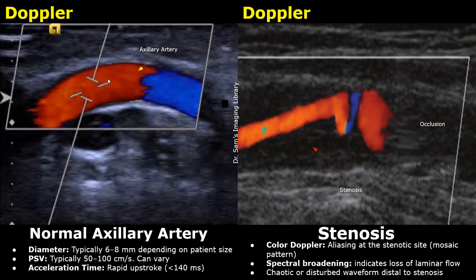Our first pathology to learn is stenosis of the axillary artery. Stenosis is the abnormal narrowing of the artery's lumen. This can be due to many reasons — thrombosis, or vasculitis and inflammation of the vessel. It can occur in cases such as giant cell arteritis or Takayasu arteritis, where there is an abnormal increase in thickness of the vessel wall which can narrow the lumen.